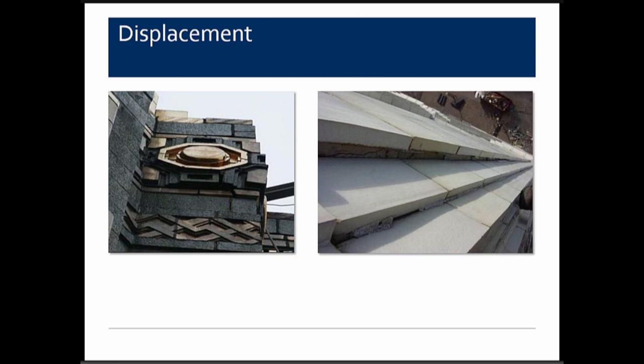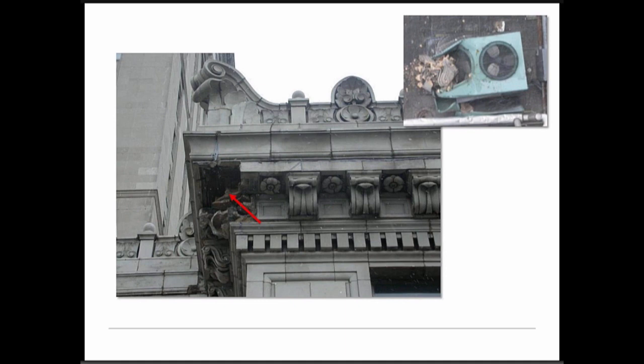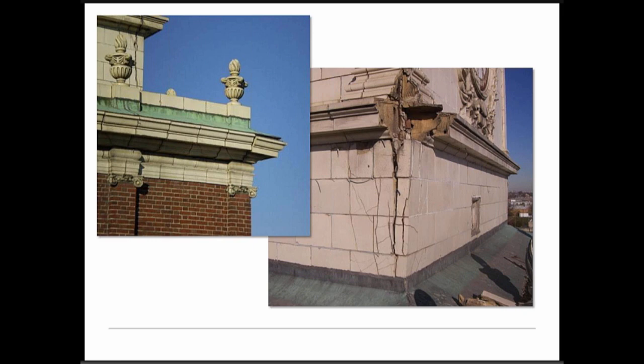Displacement at corners is pronounced — thermal movement of terracotta units can cause corners to fail and fall. One example shows a corner of a cornice that failed, ending up on a lower roof and taking out an HVAC system. Corners are often the more pronounced locations for distress because of the significant movement from both directions and lack of restraint from either side.